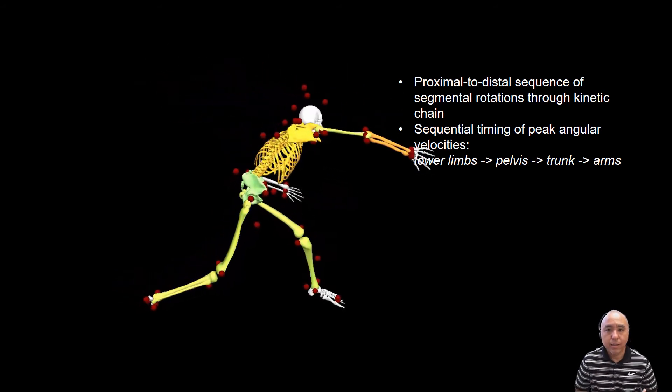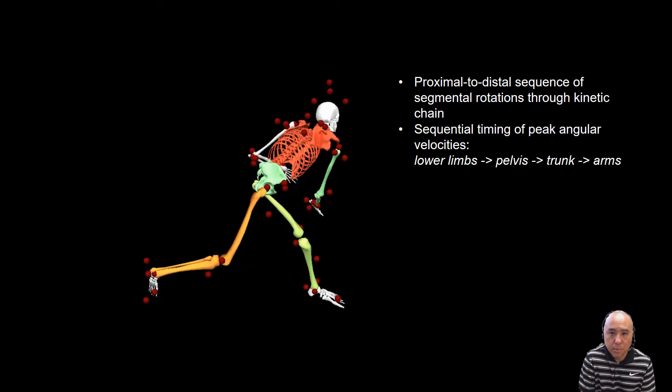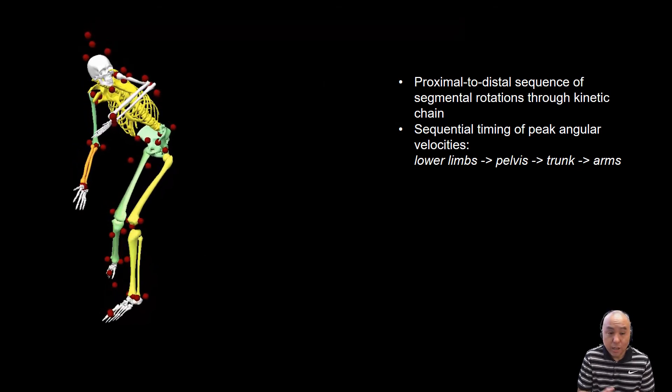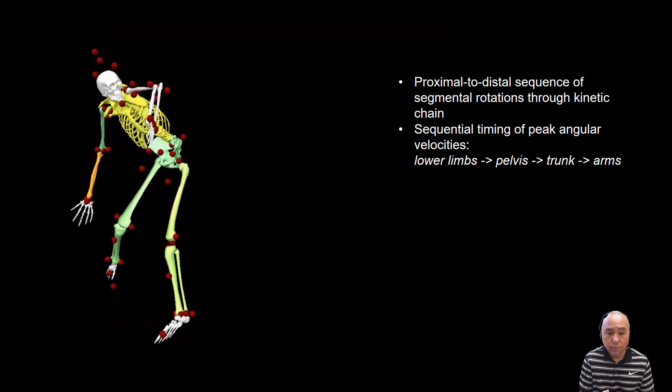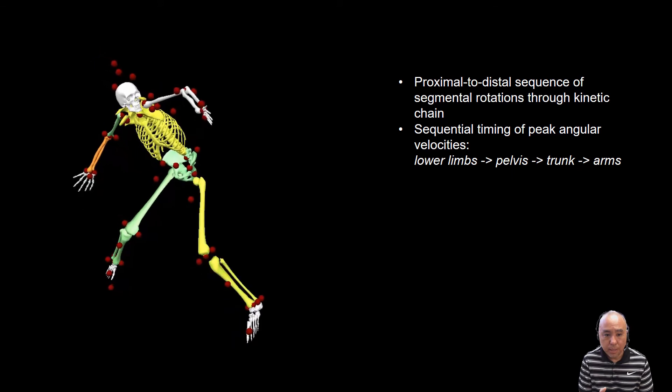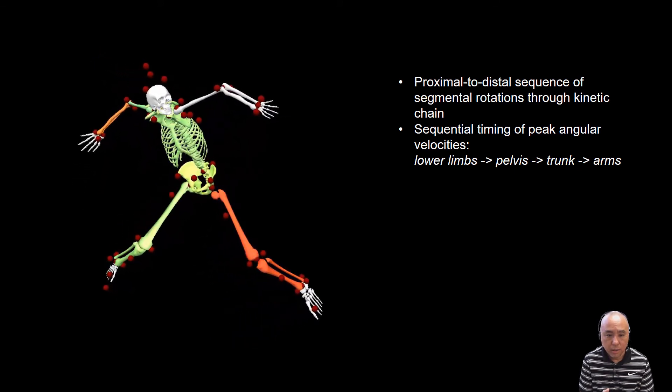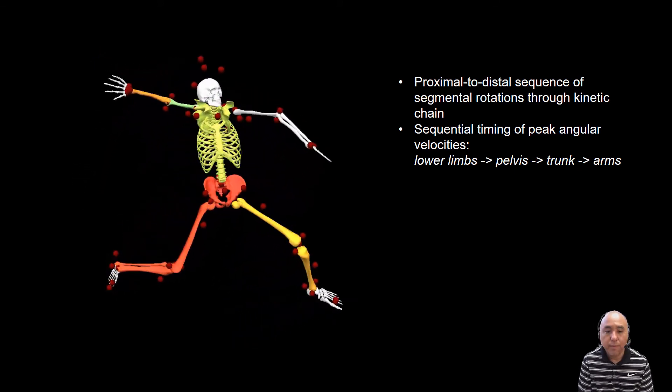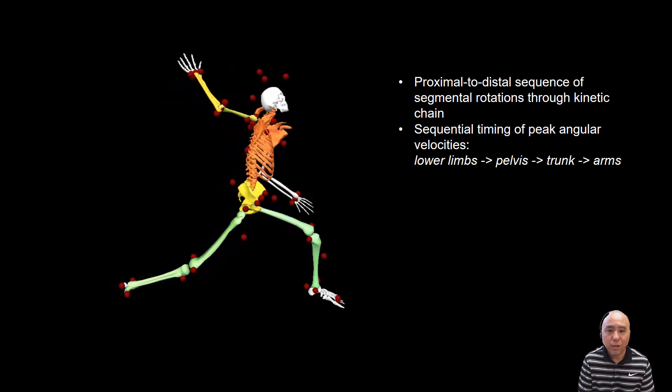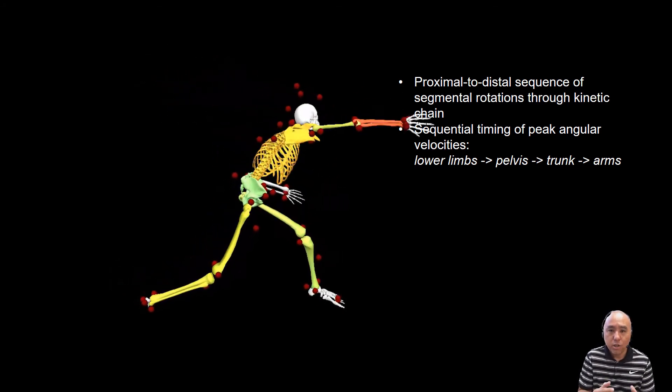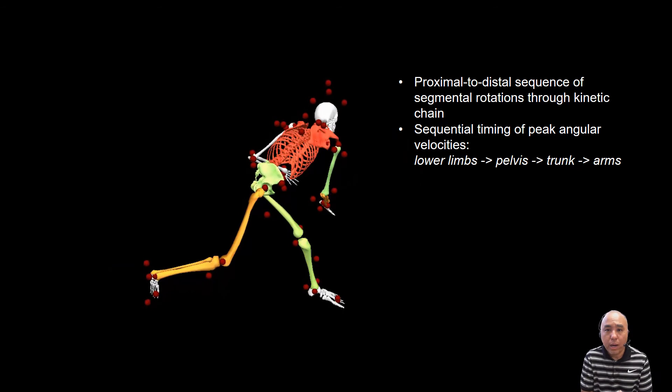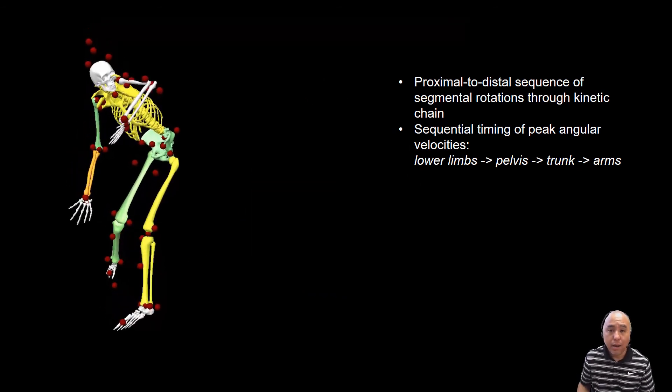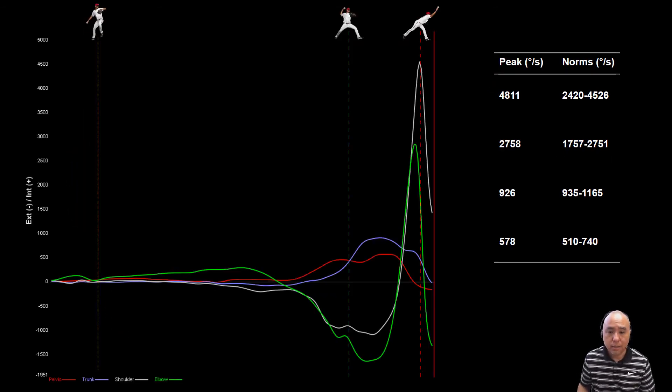So when the segment reaches or turns red as shown here, that indicates that the angular velocity for that particular segment is peaking. And look at the flow of energy, mechanical energy through the kinetic chain from the legs to the pelvis, to the trunk, and ultimately to the throwing arm. That should equate to a proper kinematic sequence, specifically a proximal to distal kinematic sequence.